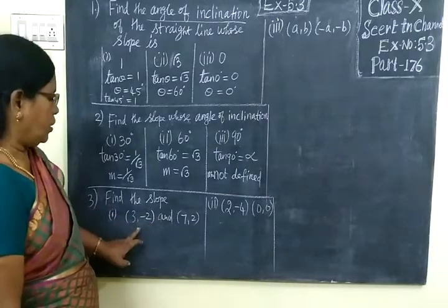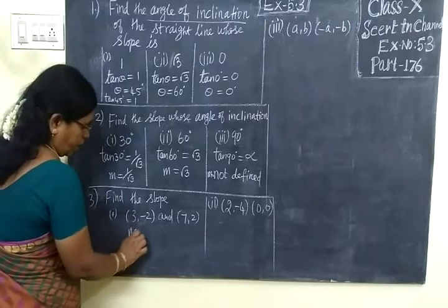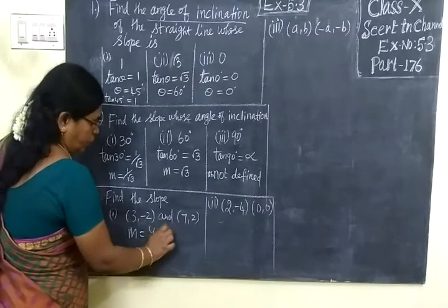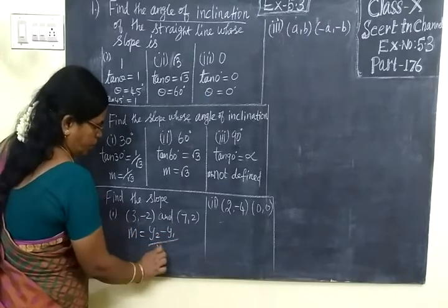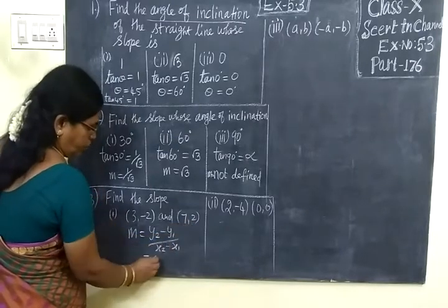Next, find the slope when two points are given. M equals (y₂ - y₁)/(x₂ - x₁). So this equals, this is y₂, 2 minus y₁.